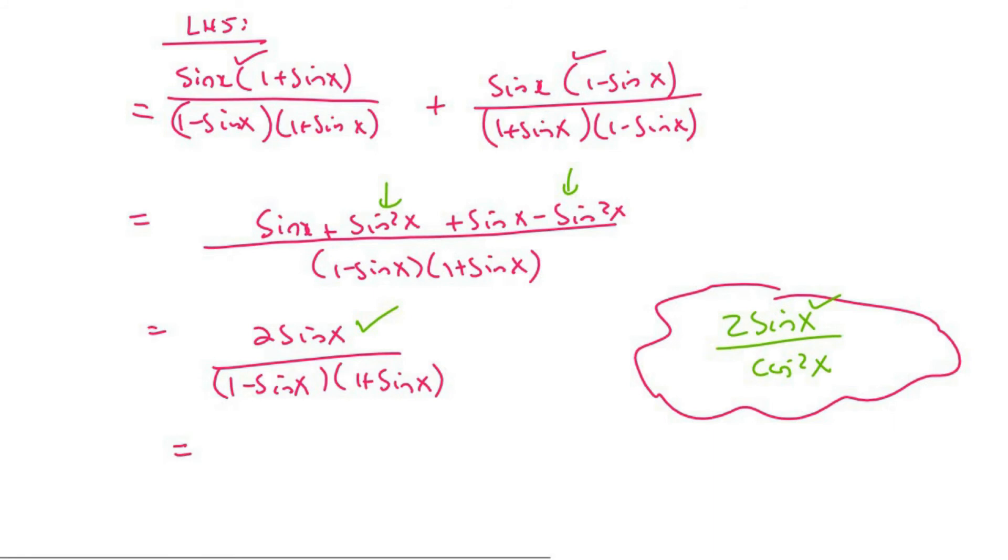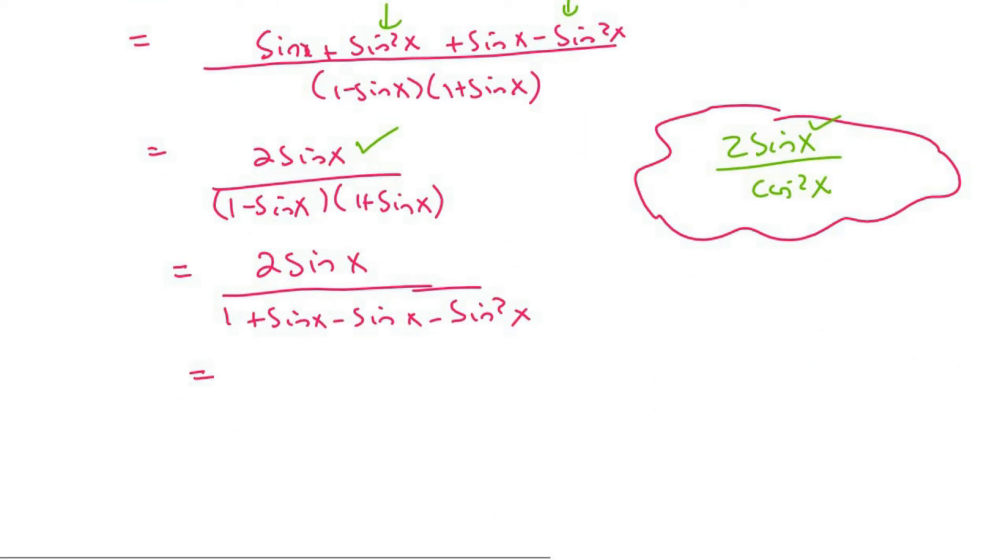Normally we don't really do that but it's going to work out in this one. So you've got 2 sine x. Then at the bottom you're going to have 1 plus sine x minus sine x minus sine squared x. Right, I just multiplied the two brackets out. And so what happens is that these are going to cancel. And so we're going to end up with 2 sine x over 1 minus sine squared x.